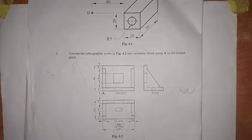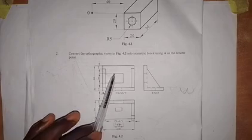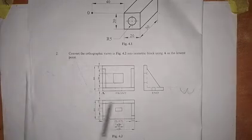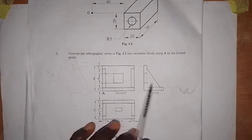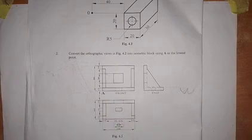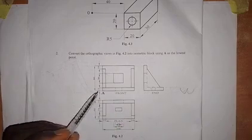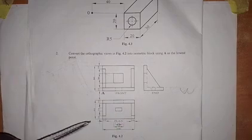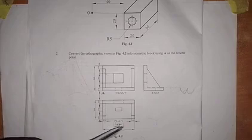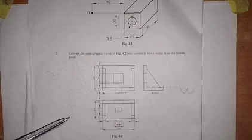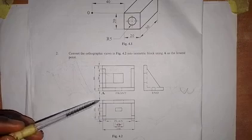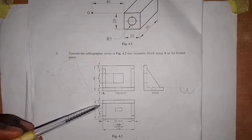So we are converting this into isometric. We have the front elevation, the plan, and the end elevation. This is point A. The distance from here to here is 100 millimeters, and the distance from here to here is 60 millimeters in the plan.